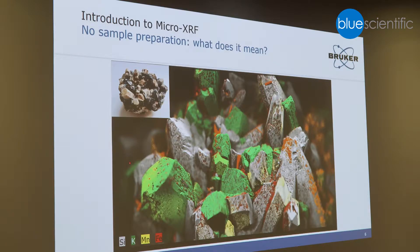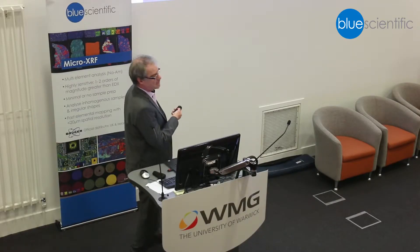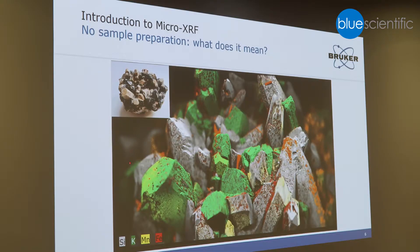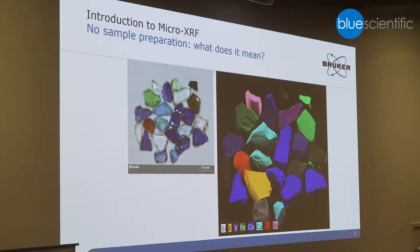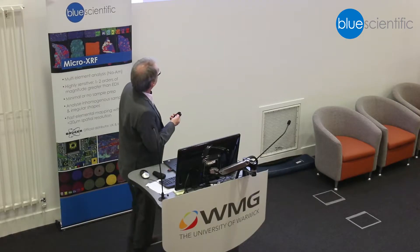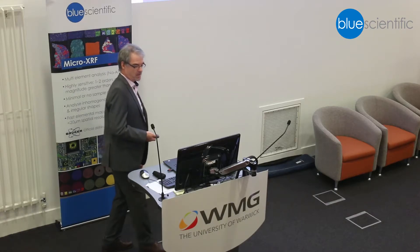What does no sample preparation mean? Here is a geological sample — you put it in the instrument, perform the mapping, and this is the resulting elemental distribution image showing silicon, potassium, manganese, and iron. Or, here you have some glass beads and you want to analyze their composition — no sample preparation is involved. You just take the glass beads as they are and perform the mapping.